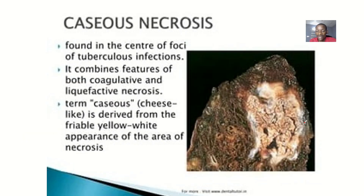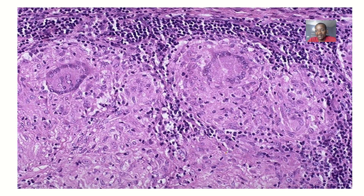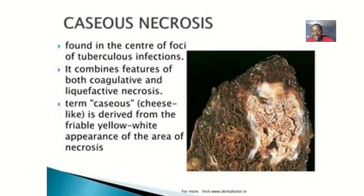There is also granulomatous inflammation, which is a type of chronic inflammation characterized by the formation of granulomas — clusters of immune cells attempting to contain the infection. Here is a histology slide of a granuloma; notice in the middle there are microorganisms being trapped. Granulomas form because there is a need to trap microorganisms that would cause further harm.